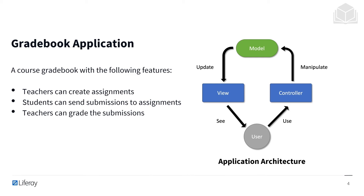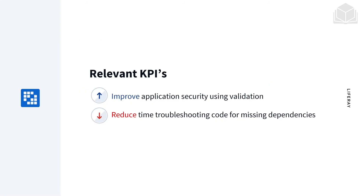Teachers can grade those submissions. In this particular module, we are going to be focusing on altering the presentation layer for this application, by creating an associated web module and enabling some portlet features. By the end of this module, our application will have a main view, an assignment editing view, and some validation options enabled. Relevant KPIs include improving application security using validation and reducing time troubleshooting code for missing dependencies.